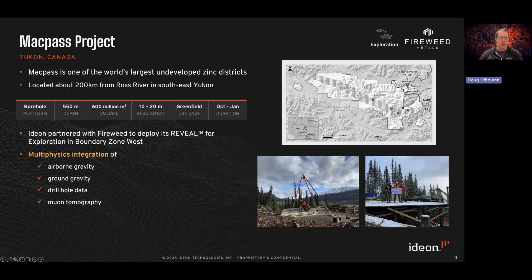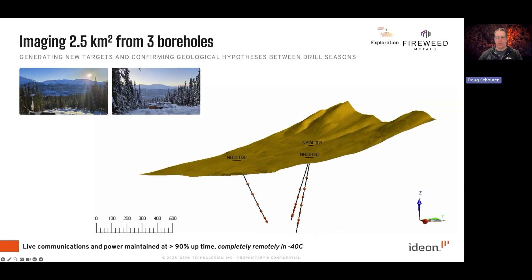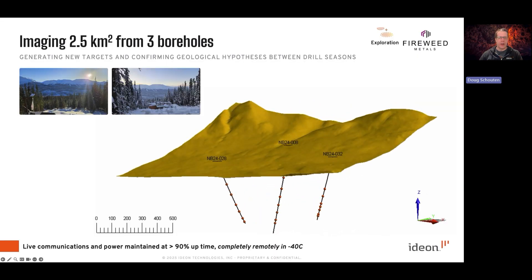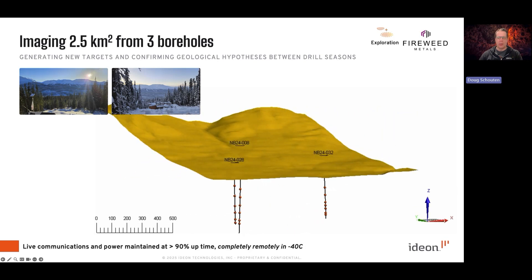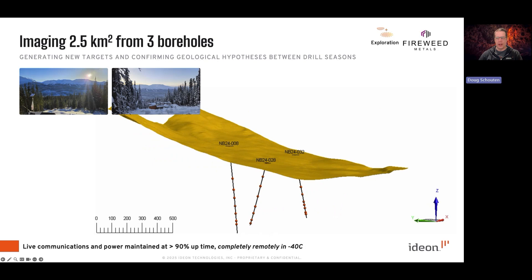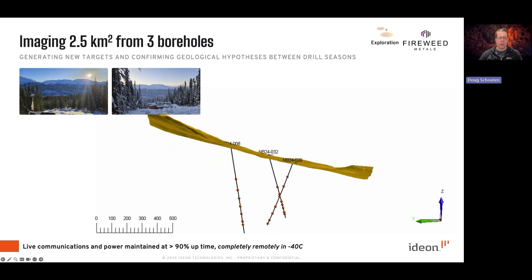The program consisted of muon tomography, but also multi-physics integration of airborne gravity, ground gravity, drill hole data, and muon tomography data. We deployed in three drill holes across a strike length of about 900 meters, down to a depth of 550 meters, and covering about two and a half square kilometers in plan view.